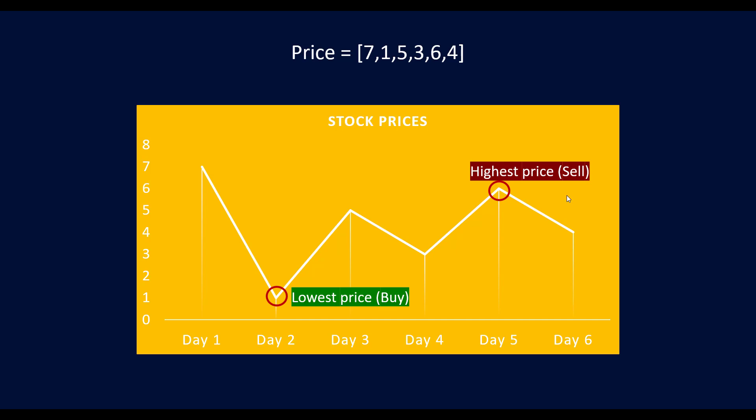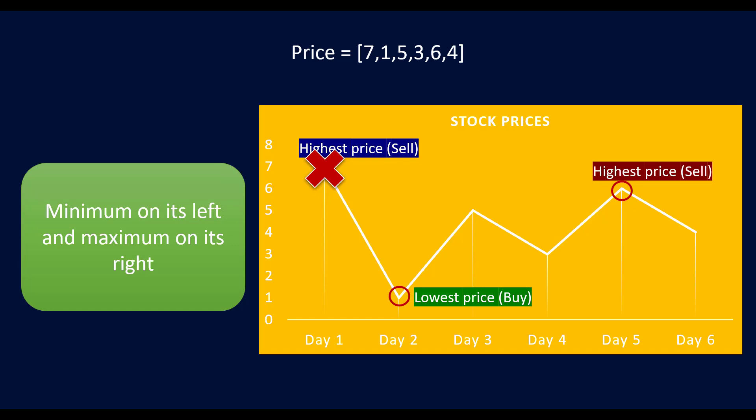What we need to do is find the lowest price to buy the stock and find the highest price to sell it. The highest price could be found here as well, but since this highest price is in the past, we cannot sell at that price — we can only sell at a price that is in the future relative to buying the stock.